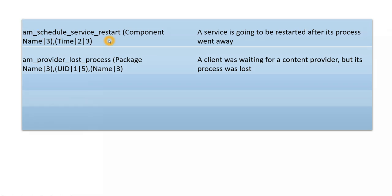`am_scheduled_service_restart` — the service is going to be restarted after its process went away. `am_provider_lost_process` — the client was waiting for the content provider but its process was lost. Whenever we are using a content provider in our use case and another application is waiting for that content provider but that process was lost, we use this log and we get the package name, UID, and all those details.